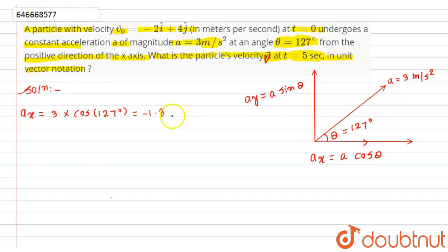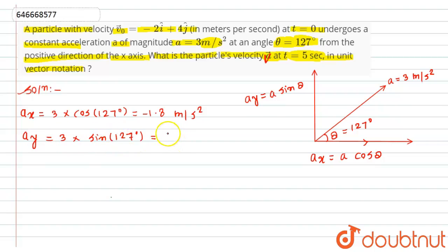Similarly, the vertical component of acceleration aᵧ = 3·sin(127°), which equals 2.4 meters per second squared.